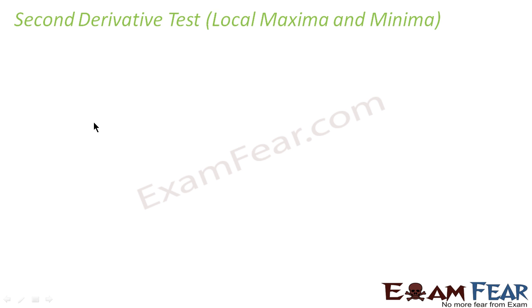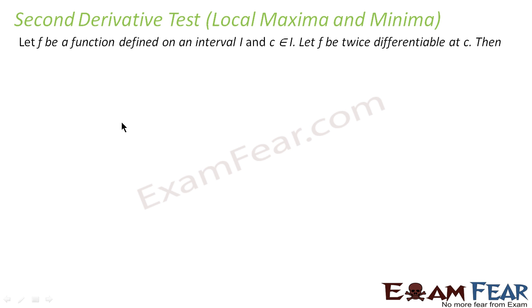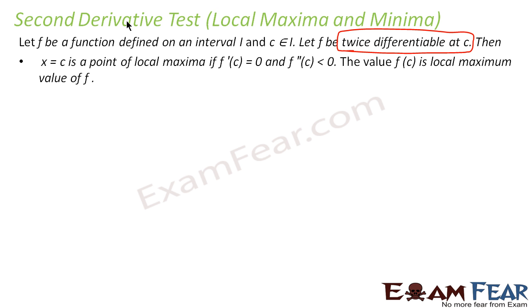So if f is a function defined on an interval, and c is any number on this interval, and f is twice differentiable — please note this condition has to be true, otherwise we cannot apply this test. The test says: if c is a point and f'(c) = 0, then c is a critical point. c can be a local maxima, local minima, or a point of inflection.